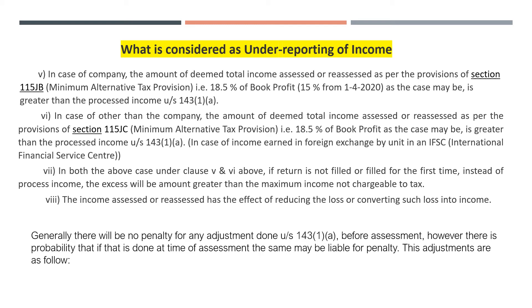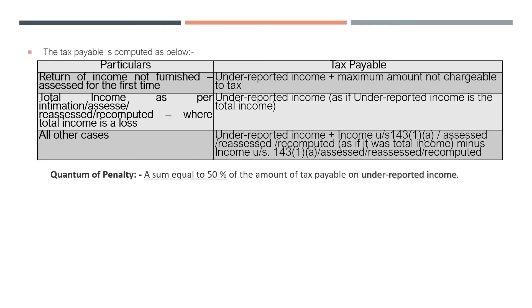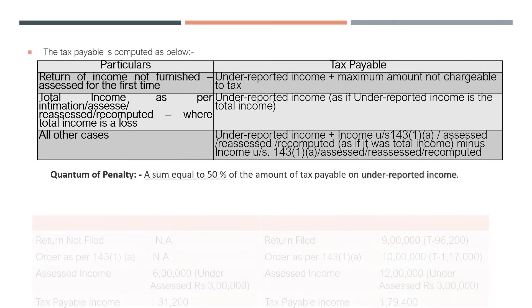Generally, if an adjustment is done under section 143.1a, no penalty will apply. But if your case is not processed through 143.1a and is instead selected for scrutiny, the 143.1a benefit will not be available. In that case, the tax payable has to be calculated by the assessee as follows.